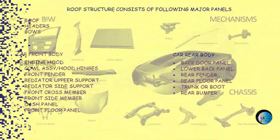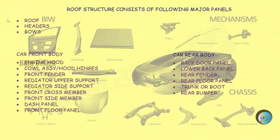Roof structure consists of the following major panels: roof, headers, and bows. Core front body panels include: engine hood, cowl assembly with hood hinges, front fender, radiator upper support, radiator side support, front cross member, front side member, dash panel, and front floor panel. Core rear body panels include: back door panel, lower back panel, rear fender, rear floor panel, trunk or boot, and rear bumper.